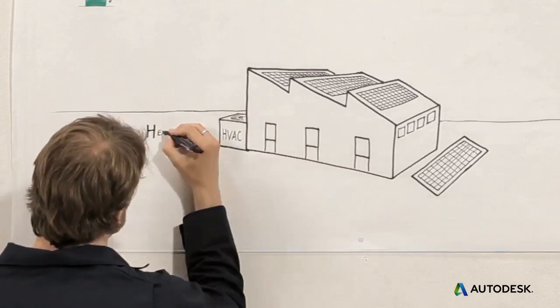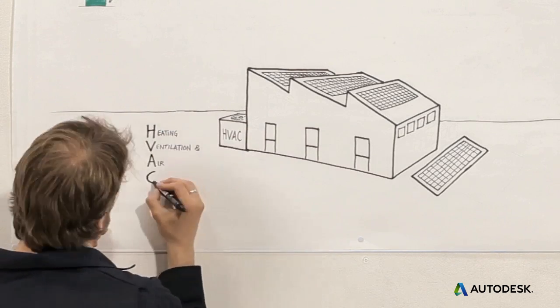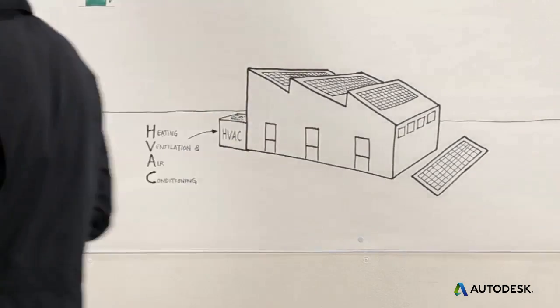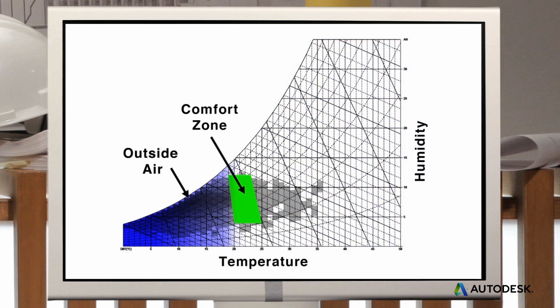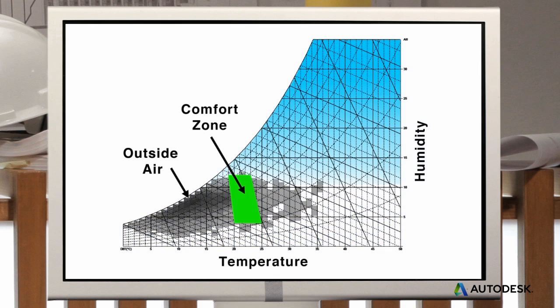If you can't entirely achieve thermal comfort passively, you'll need to make up the difference with active HVAC systems. People's thermal comfort mainly depends on temperature and humidity. When outside air is too hot or too cold or the humidity is too low or too high, you'll have to condition the outside air as you bring it into the building.